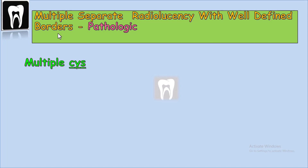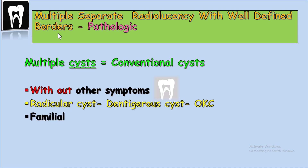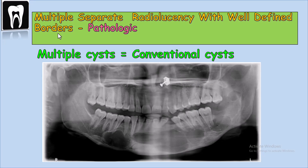Multiple cysts — or multiple conventional cysts — can be seen inside the jaws even with no syndromic symptoms, such as dentigerous cysts, radicular cysts, or even OKC. It can be familial, meaning one of the parents may have the same history. But it is very important to confirm there are no syndromic symptoms. In this panoramic radiograph, you can see multiple cysts in the mandible starting from the left ramus, molars, and premolar area, the symphysis, and the right molar and premolar area. Clinical examination and history showed no syndromic symptoms, so we can say these are conventional cysts.